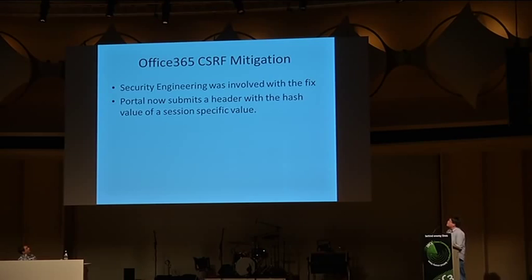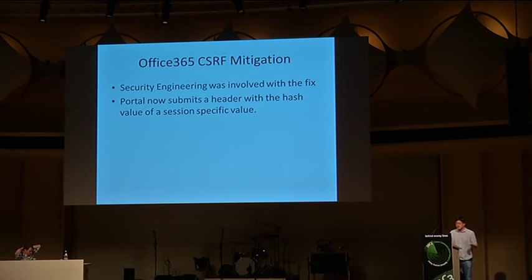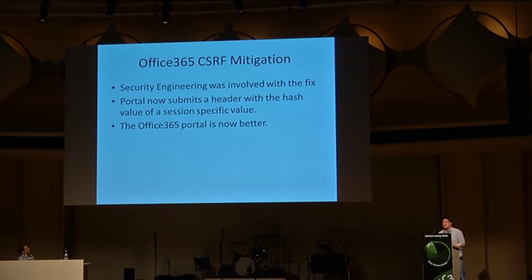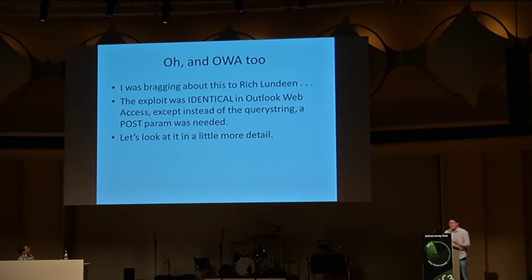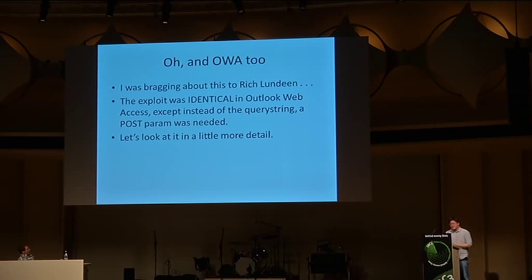We actually found this exact bug in the early development cycle of the Office 365 portal. There was an AJAX function that performed updates and they were doing this exact same thing — taking a cookie value and comparing it to a form value, and if those two match then they assume that's a legitimate request. The problem was that the microsoftonline.com domain space is actually very big, with lots of other subdomains and third-party applications, and we did manage to find a reflected cross-site scripting in a subdomain of microsoftonline.com.